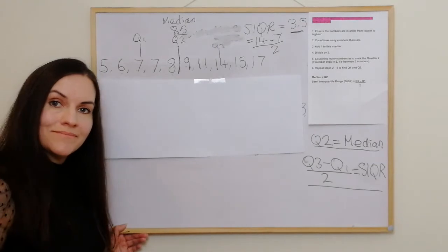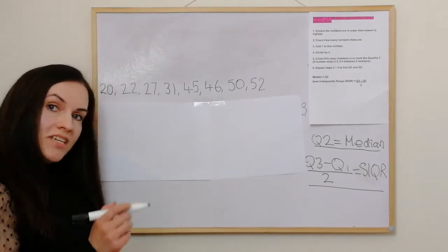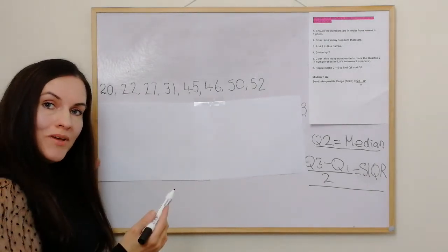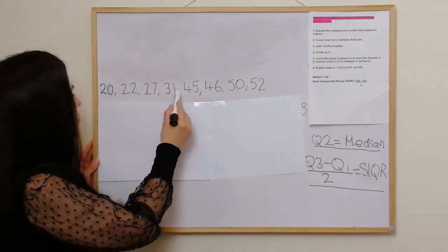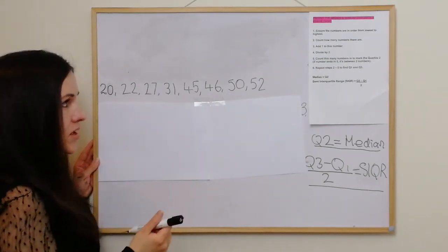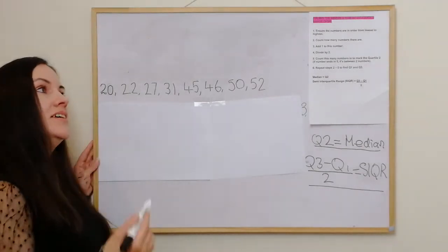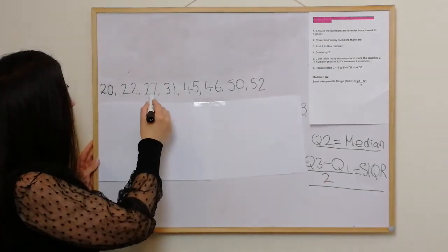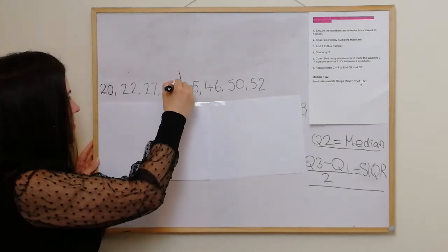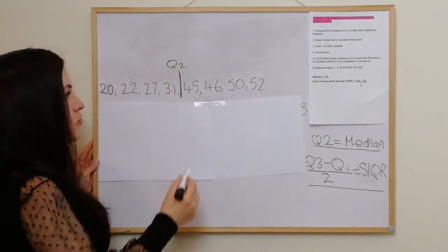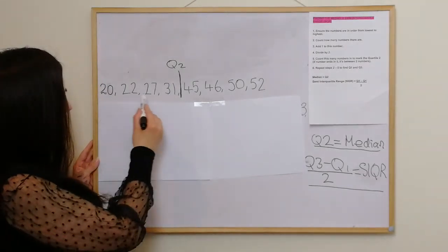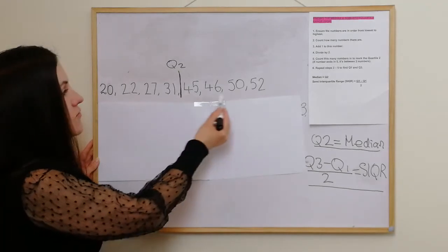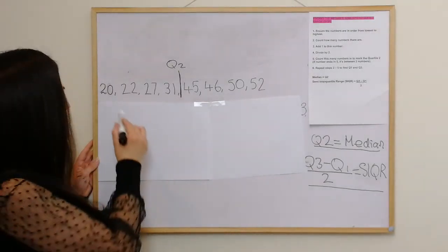We're going to use another example and do the same with it. The numbers are in order from lowest to highest. We count how many there are — 1, 2, 3, 4, 5, 6, 7, 8. We need to add 1 to get 9, then divide by 2 to get 4.5. So counting in: 1, 2, 3, 4, and Q2 is in here. To check, make sure you've got the same number of numbers on each side — 4 on that side and 4 on that side.